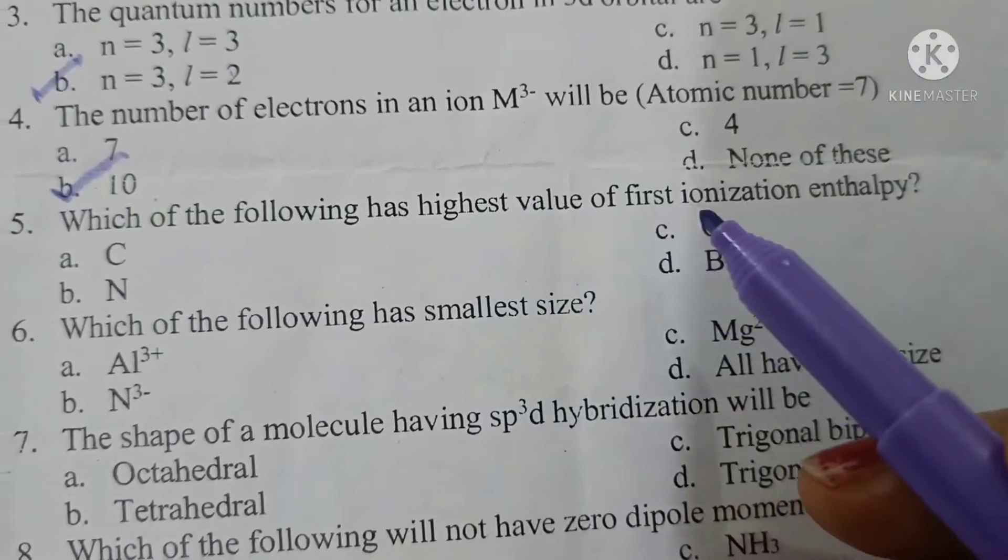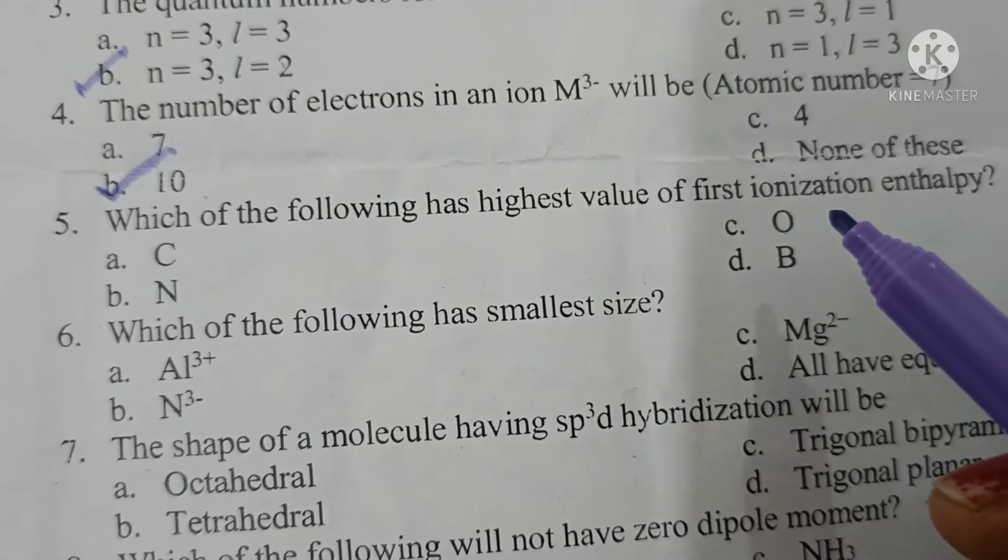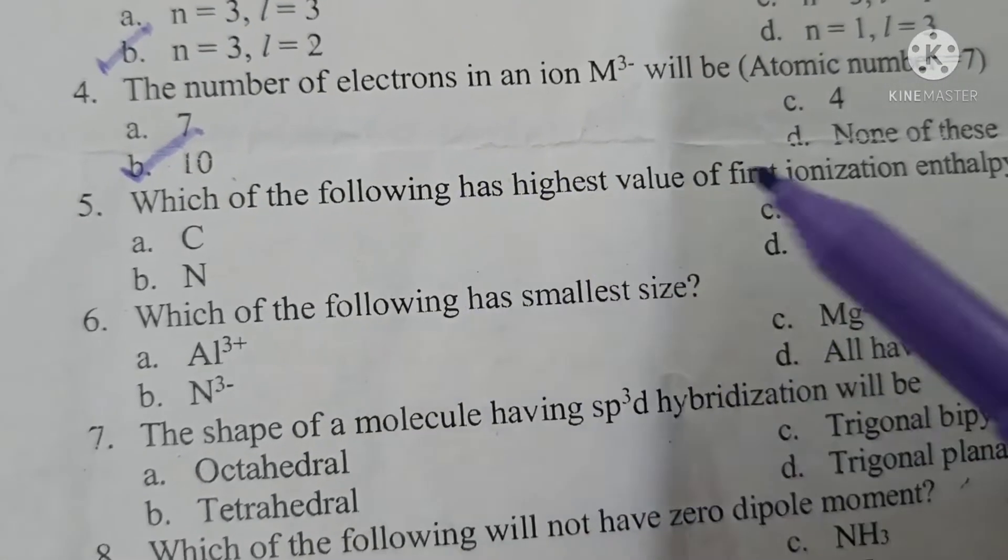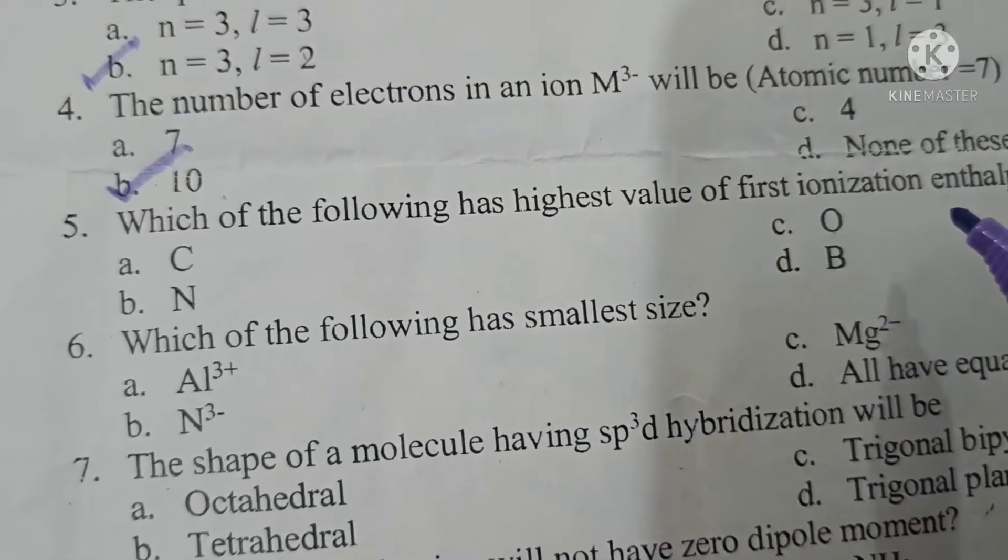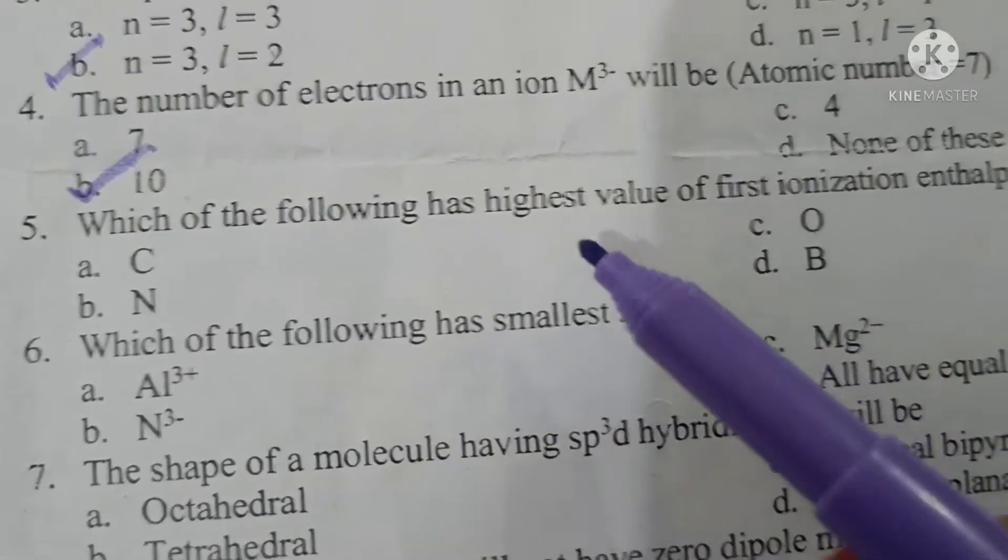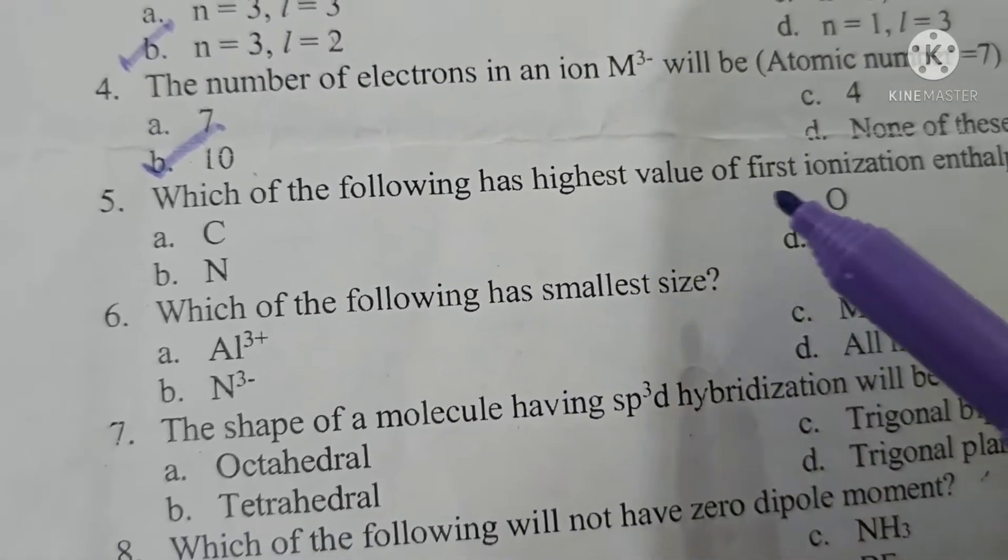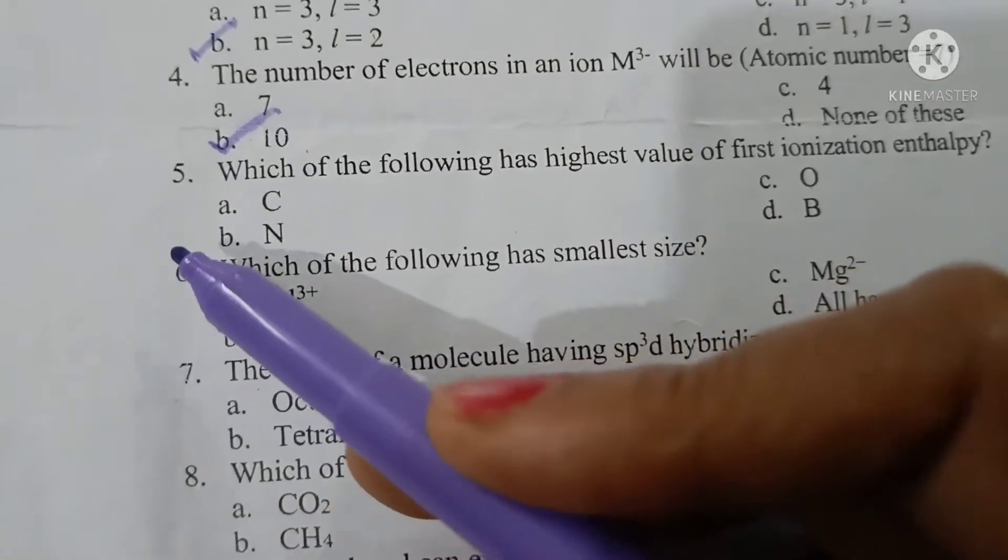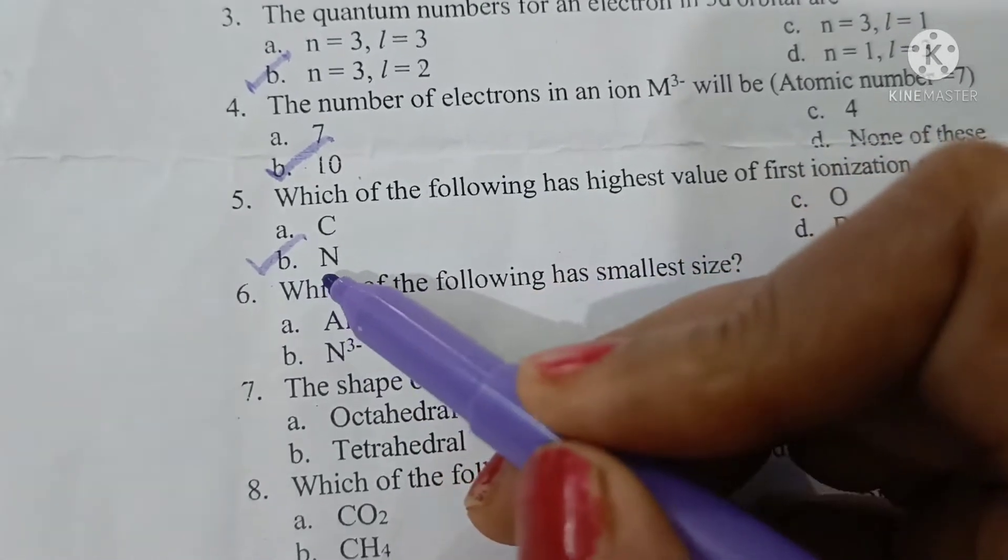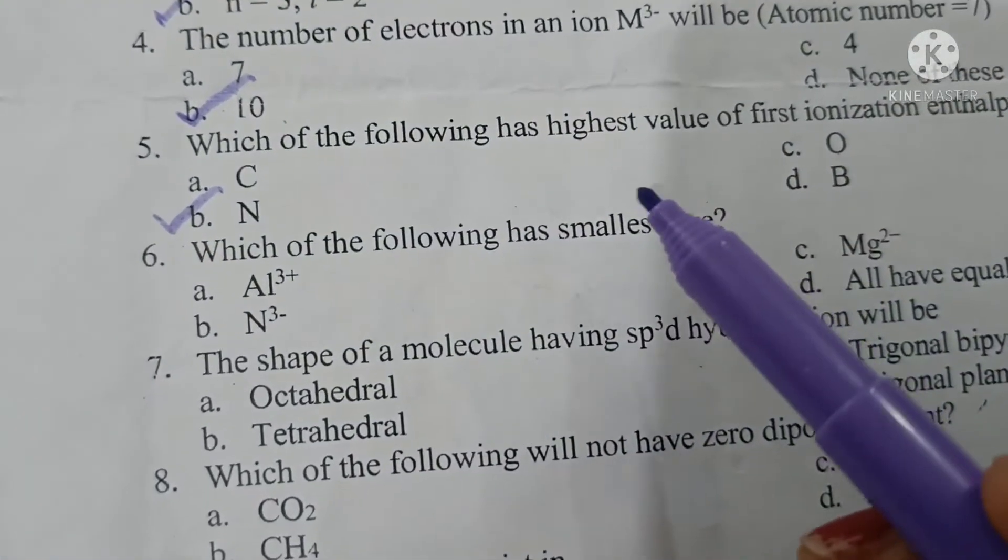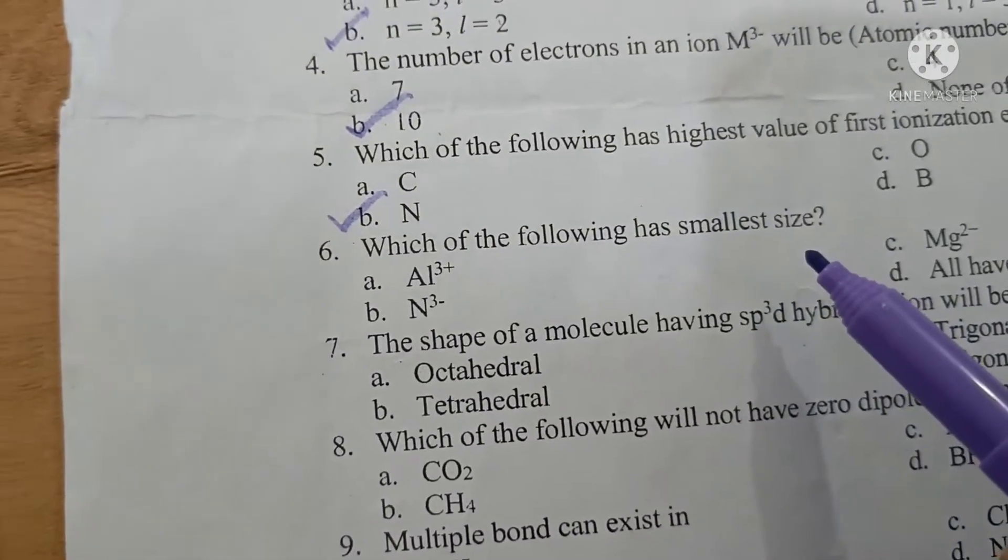Which of the following has highest value of first ionization enthalpy? As we move from left to right in a period, the first ionization enthalpy value increases. Accordingly oxygen should have the highest first ionization enthalpy, but because in case of nitrogen, it is half filled configuration which is very stable, nitrogen will have the maximum value for first ionization enthalpy.